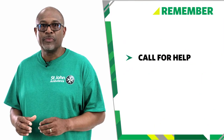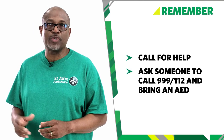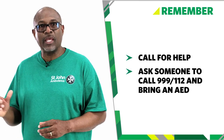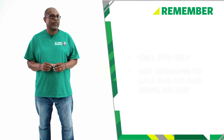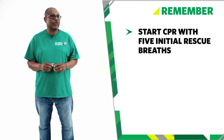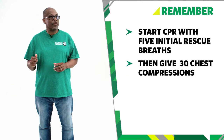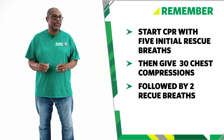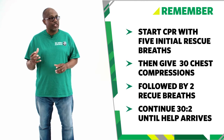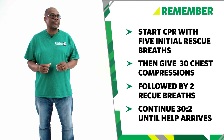So remember: if you come across a child that is unresponsive and not breathing normally, call for help. Tell a helper to call 999 or 112 straight away and ask them to bring an AED. Give 5 initial rescue breaths, then 30 chest compressions followed by 2 rescue breaths. Continue giving 30 chest compressions to 2 rescue breaths until help arrives or the child starts to breathe. And that's how we perform CPR on a child.